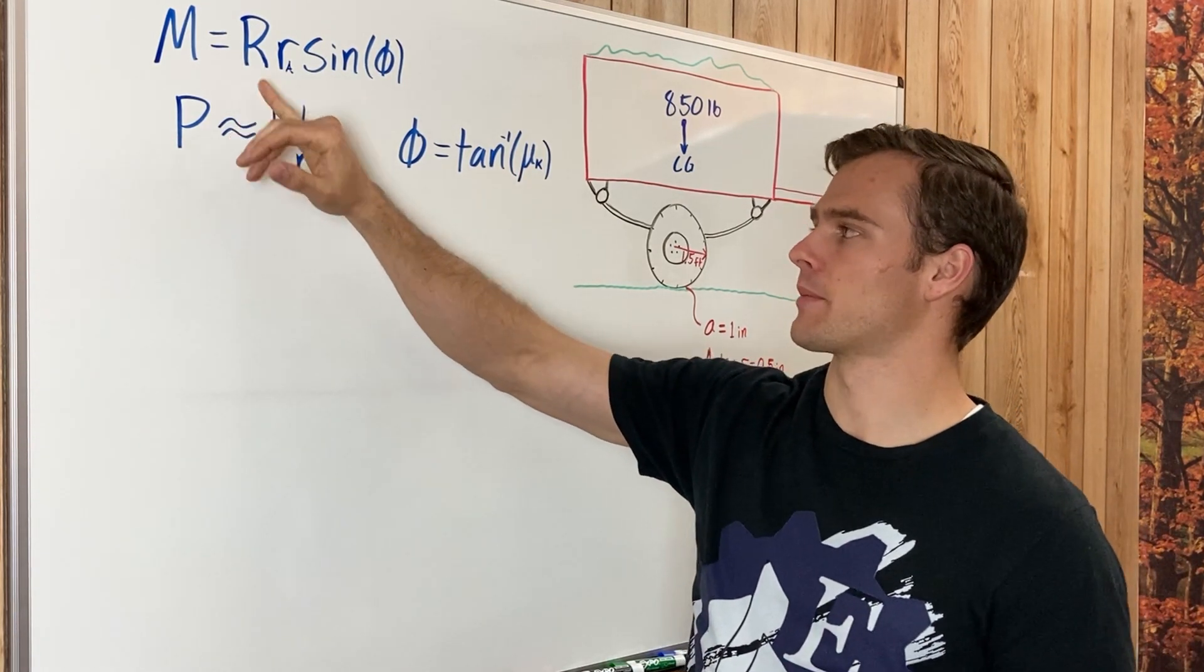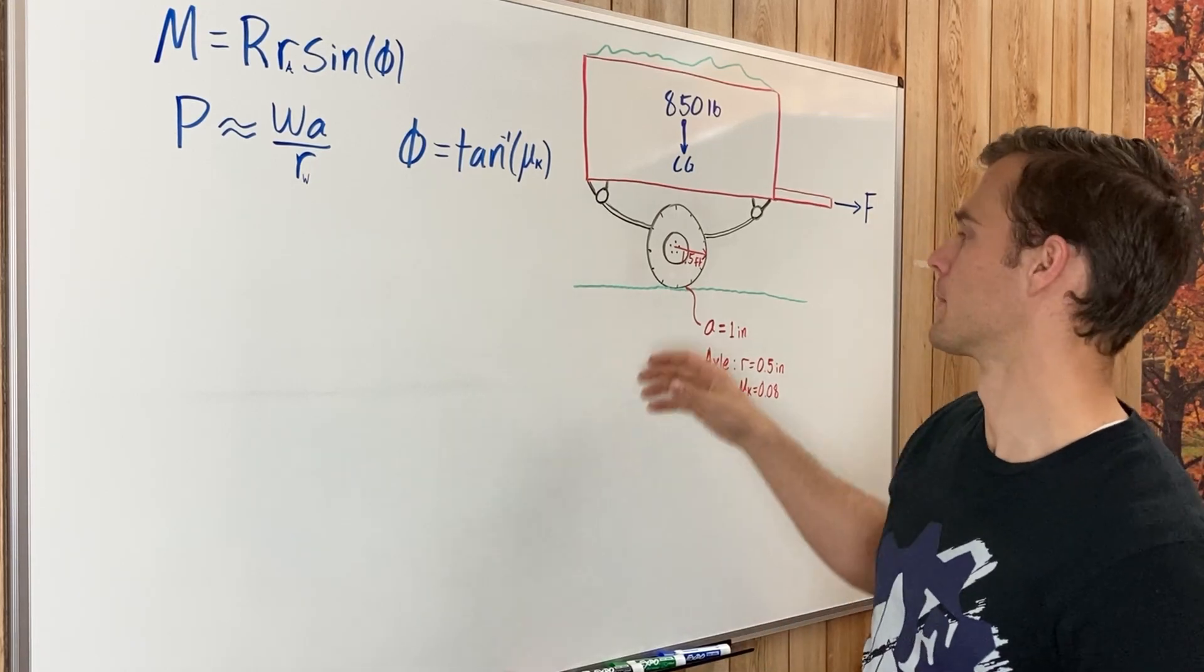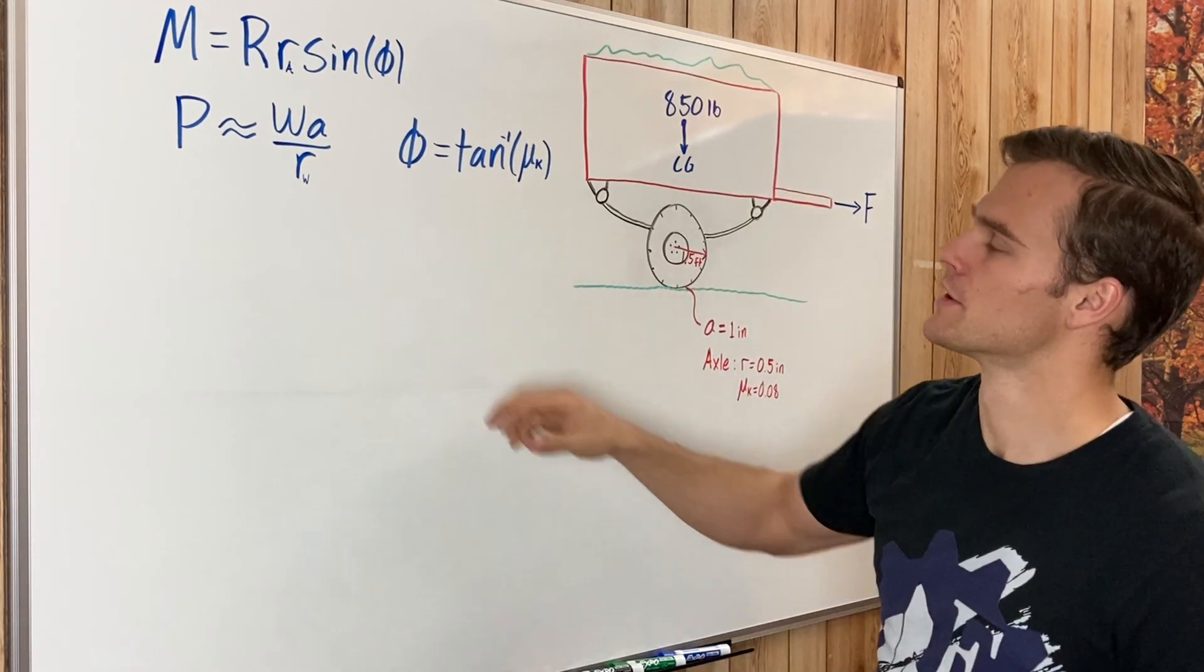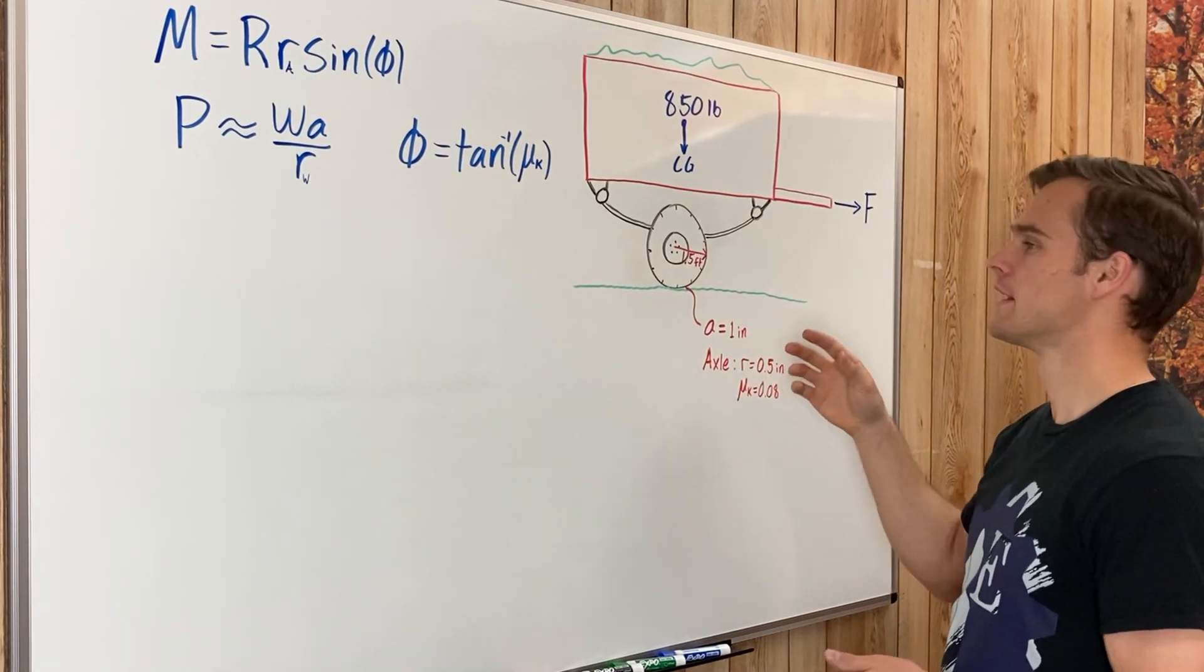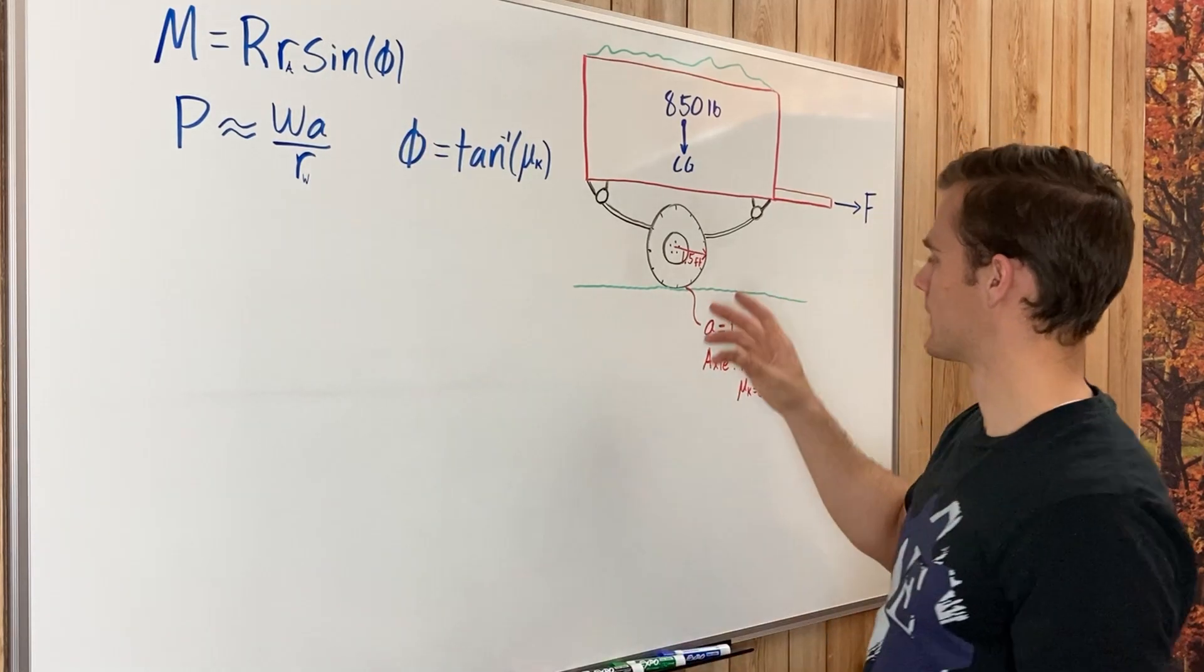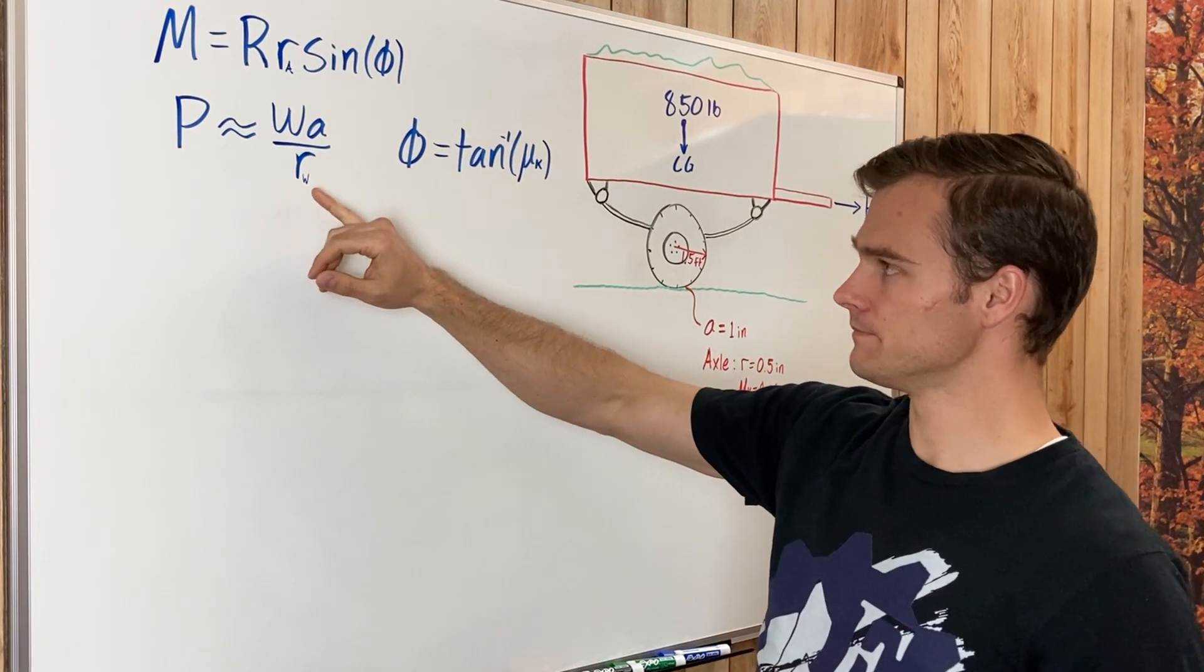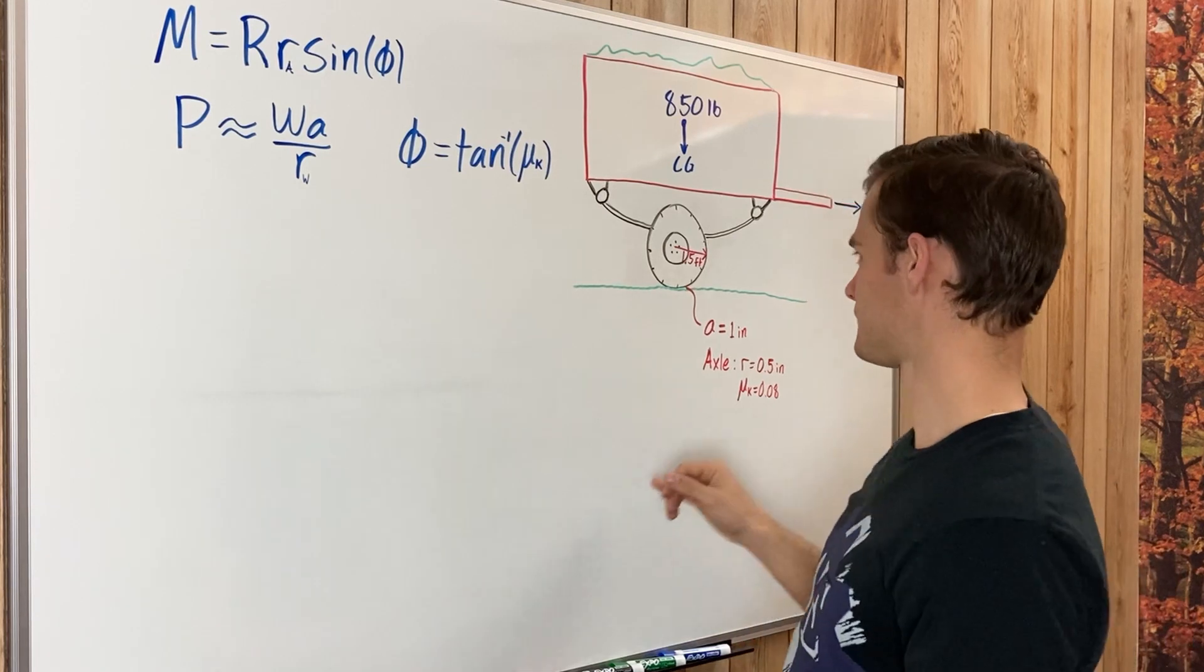They're both the weight of the trailer pushing down on the axle and on the ground. So our little r are our radii. The r in this equation is the radius of the axle, which is half an inch. The little r in this equation is the radius of the wheel, which is one and a half feet or 18 inches.